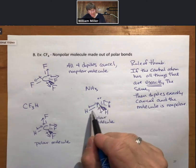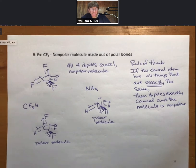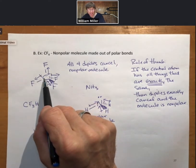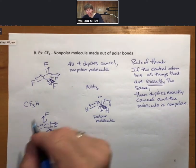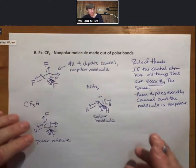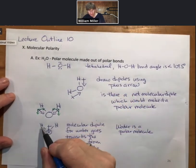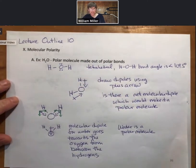Nitrogen has three hydrogens and a pair of electrons. Those are different. Those dipoles will not exactly cancel. Polar. Three things the same, one different, polar. Four things exactly the same, all those dipoles exactly cancel. Nonpolar. Two things the same, two things different, polar.